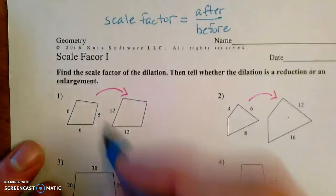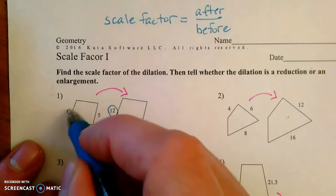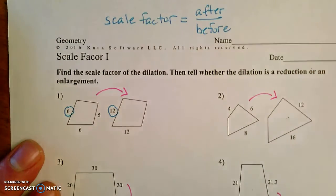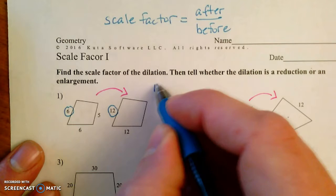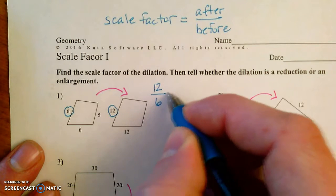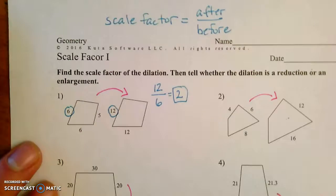So in this case, 12 is the after, 6 is the before, so 12 divided by 6 equals 2.